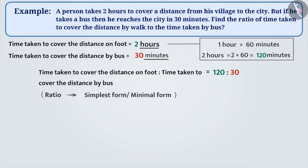Usually, we represent this ratio in its simplest form. We write 120 is to 30 as 120 by 30. Since HCF of 120 and 30 is 30, we will divide the numerator that is 120 and the denominator that is 30 by 30. So, we get the simplest form as 4 by 1.